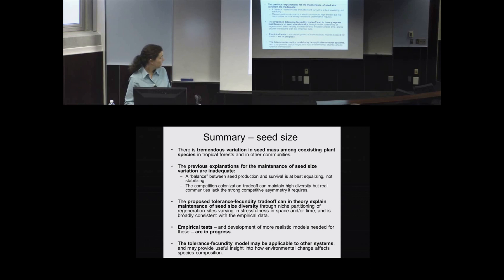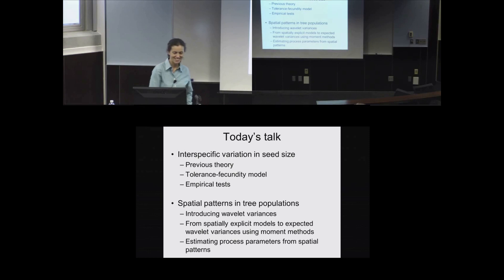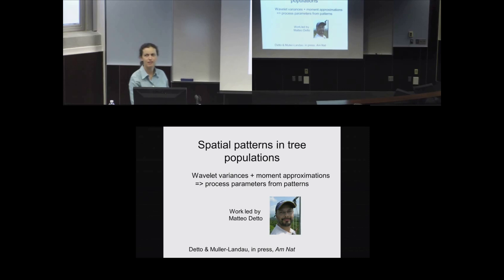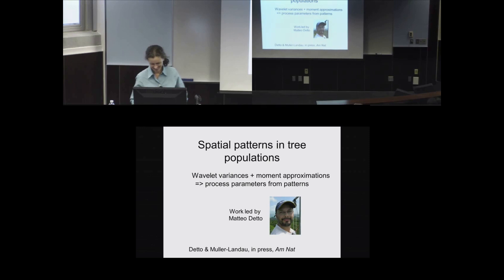Now I'll move on to the much shorter second half of the talk on spatial patterns in tree populations. This is totally different work, led by Matteo Detto, who was a postdoc and is now an associate scientist at the Smithsonian Tropical Research Institute. Matteo came from an environmental engineering background, and early in his postdoc I pointed him to some moment methods papers. He immediately grasped them and suggested using Fourier space and wavelets instead.